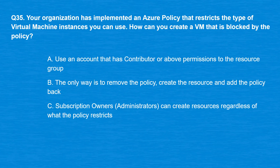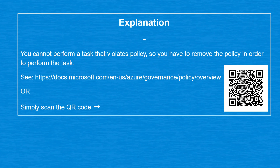Question 35: Your organization has implemented an Azure policy that restricts the type of virtual machine instances you can use. How can you create a VM that is blocked by the policy? Option A: Use an account with Contributor or above permissions. Option B: The only way is to remove the policy, create the resource, and add the policy back. Option C: Subscription owner administrators can create resources regardless of policy. The correct answer is Option B. You cannot perform a task that violates policy, so you must remove the policy, perform the task, then re-add it.